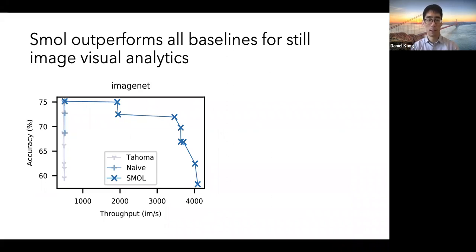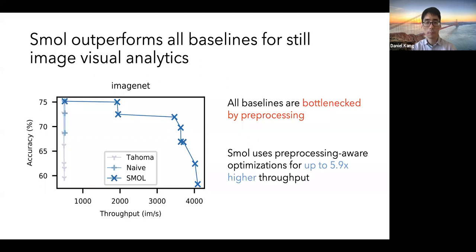For the image analytics tasks, we attempt to do classification here. What I'm showing here is Tahoma and the Naive on the left-hand side of this plot, and Smol on the right-hand side. All the baselines are bottleneck by pre-processing, so as the accuracy decreases, we can see that the throughput does not actually increase because we're not bound by the DNN. In contrast, Smol uses pre-processing-aware optimizations for up to 5.9 times higher throughput at a fixed accuracy.